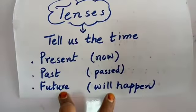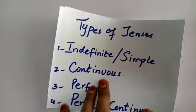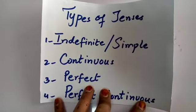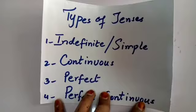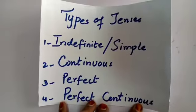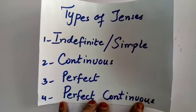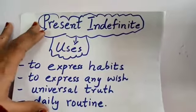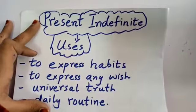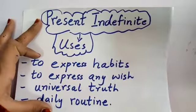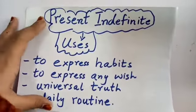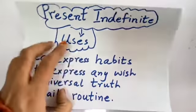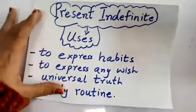Grade 3, there are different types of tenses — for example, indefinite or simple, continuous, perfect, and perfect continuous tense. Today we will focus on present indefinite tense, also called present simple. We will learn what present indefinite tense is.